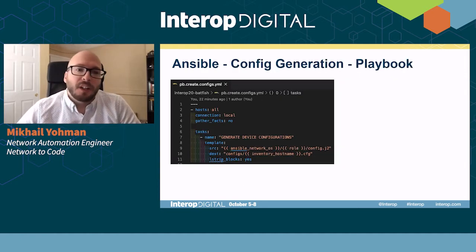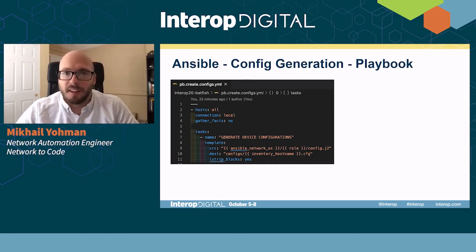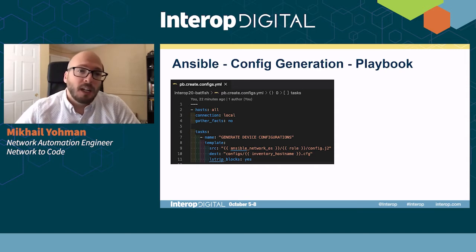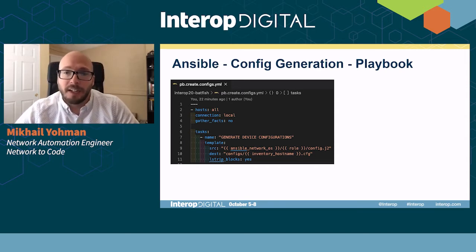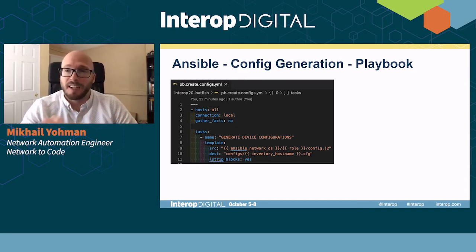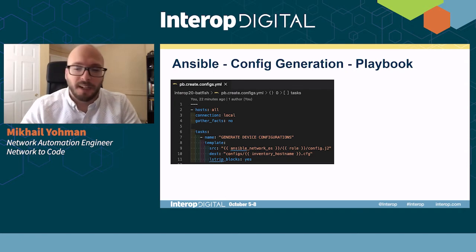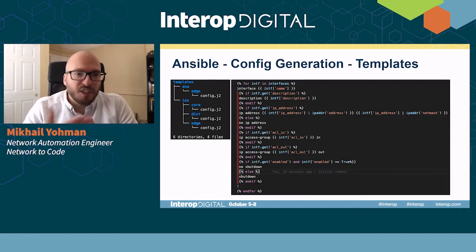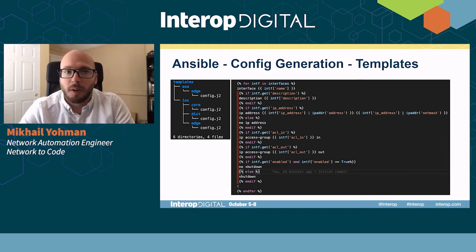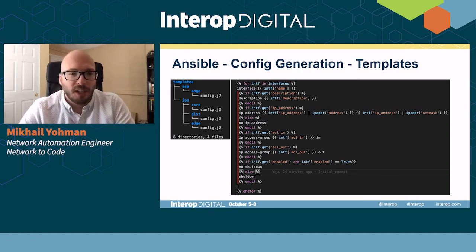For config generation, we're using some of those built-in variables. We're using our Ansible network OS and then the role that was defined in our host info. We're going to output it into our configs directory with the hostname it's run against. The configs portion is the key part here, because that's going to fit into the Batfish snapshot folder structure it's expecting.